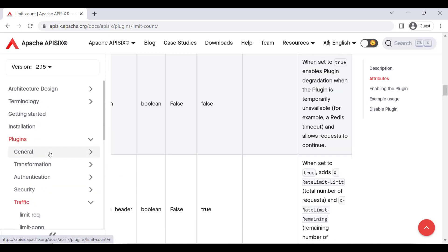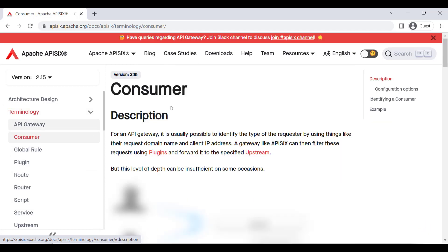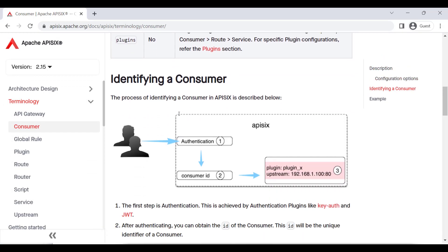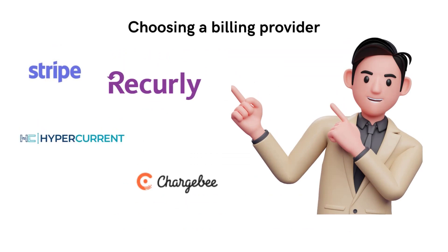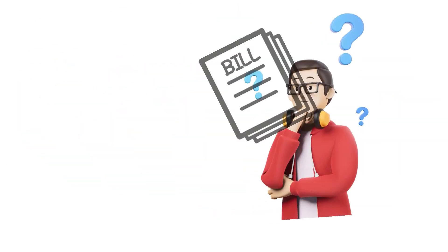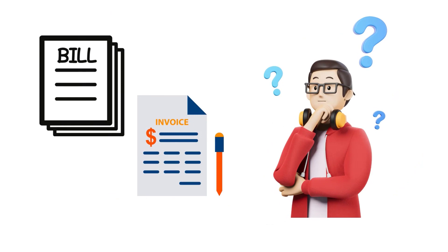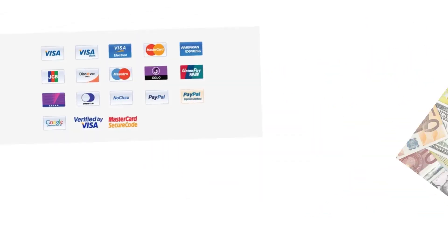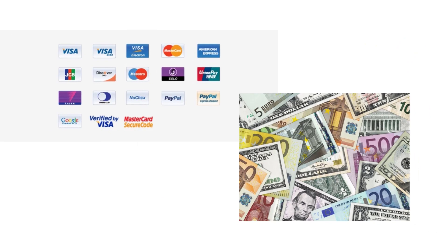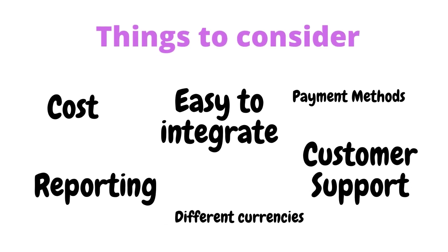Please refer to the documentation to understand the consumer concept and learn the different ways to set up rate limiting with Apache APISIX. Next, for our API monetization stack you need third-party recurring billing solutions such as Stripe, Recurly, Hypercurrent, and many more. We don't recommend any particular payment service in this video and leave the choice of payment provider up to you. The billing provider obviously needs to receive a usage charge for each customer, issue an invoice, and support multiple billing models, currencies, and payment methods. Here is a list of key factors you need to consider while choosing a billing provider.